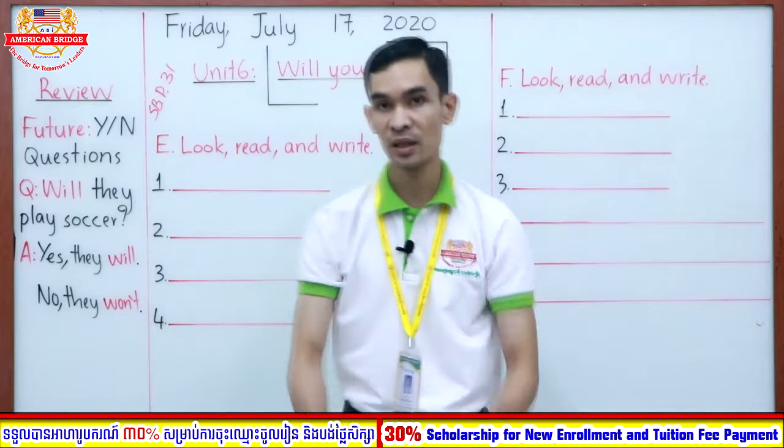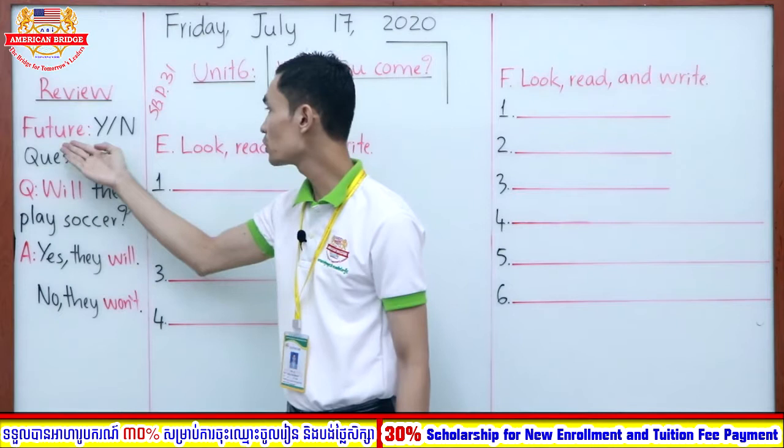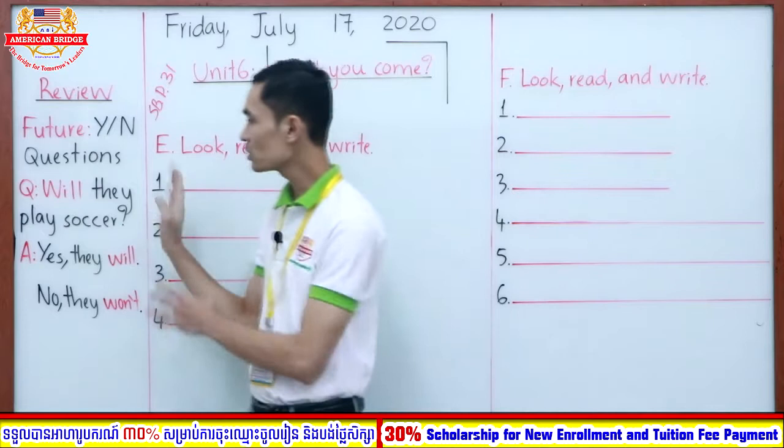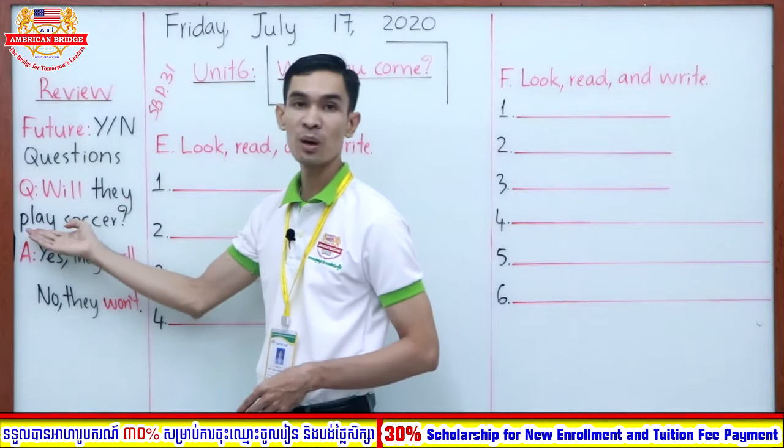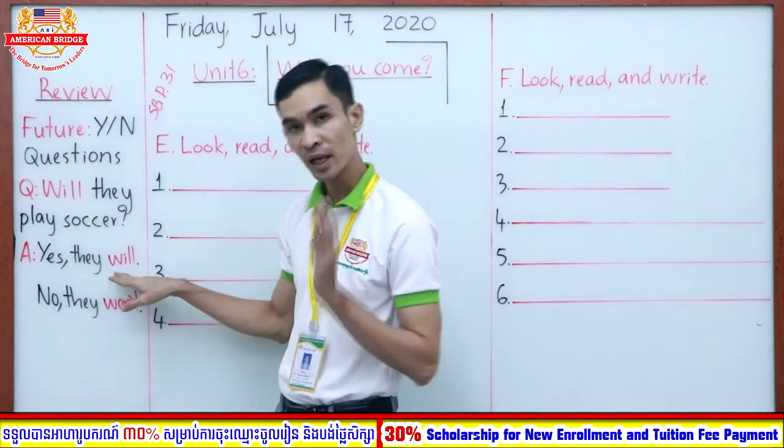So now you can look at the review part here. Unit 6, we focus on future yes/no questions, right? Look at the example. When you make the question, you just move 'will' to the front, right? For example: 'Will they play soccer?' So: will + subject + base form of verb, right?